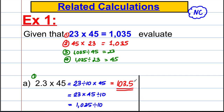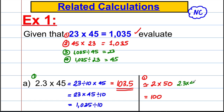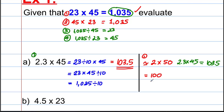Now I'll show a slightly different method using estimation. We can round everything to one significant figure: 2.3 becomes approximately 2, and 45 becomes approximately 50, giving 2 multiplied by 50 which equals 100. So the answer is approximately 100. Looking at our related calculation fact one, the answer to 2.3 multiplied by 45 is in the region of 100, so it must be 103.5. Either way, you decide which method you prefer.